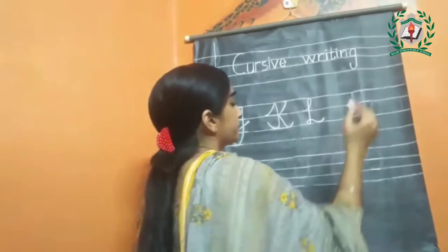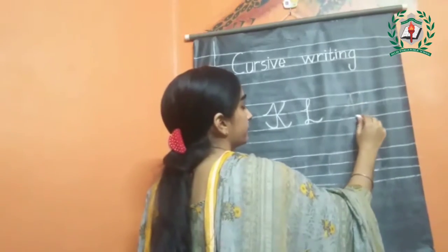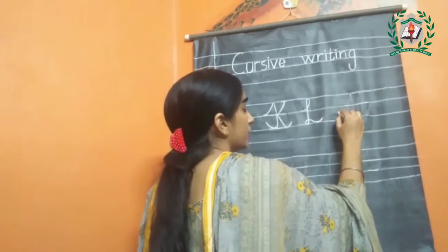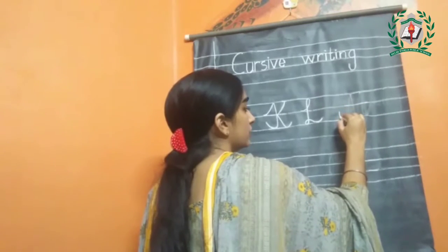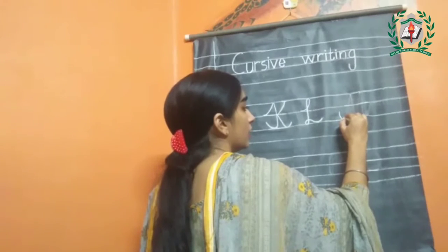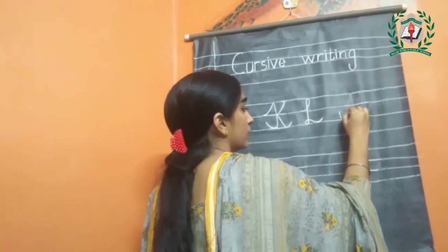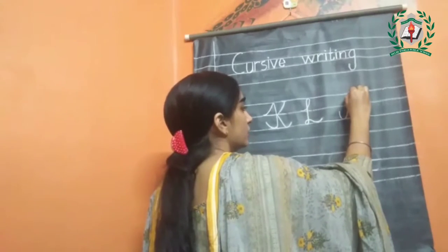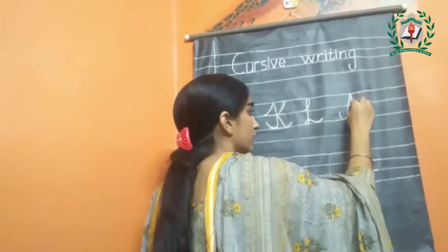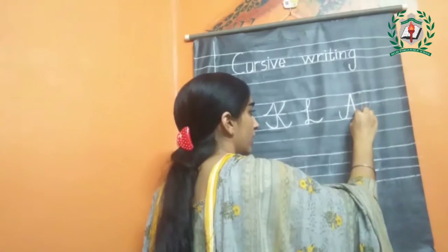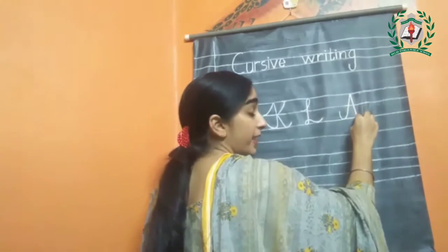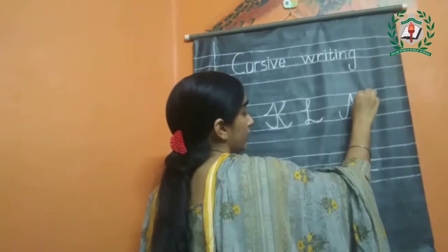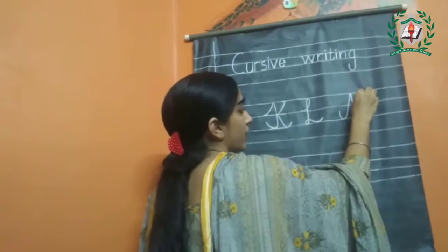Now letter M. Make a curve at end. Now draw a slanting line touching to the baseline, then draw a slanting line touching to the upper line. Then one more slanting line touching to the baseline. One more slanting line touching to the upper line.